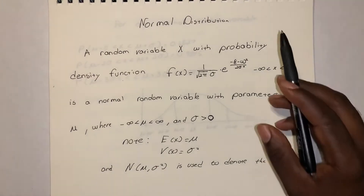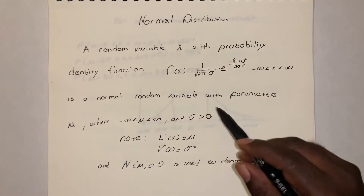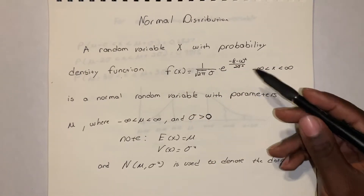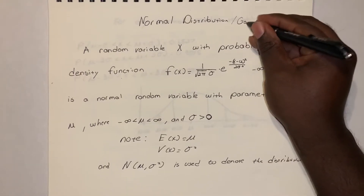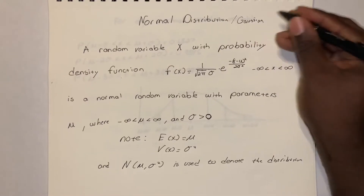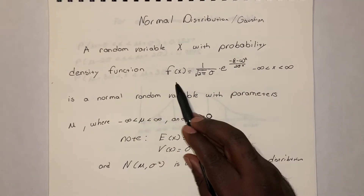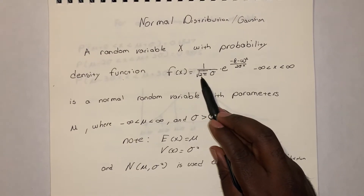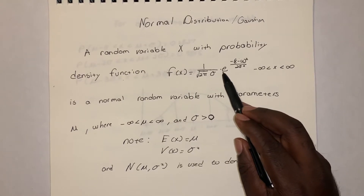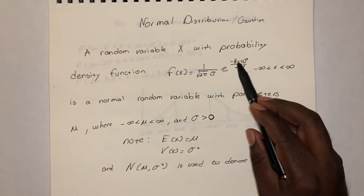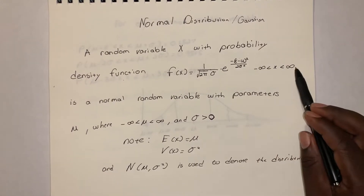Today I want to talk about a special distribution. Last time it was a uniform distribution, but this one is a normal distribution. You'll see it a lot in different types of literature because it's so important to science, mathematics, and engineering. It's also called a Gaussian distribution. A random variable X has PDF f(x) = 1 divided by the square root of 2π times σ, multiplied by e raised to the power of negative (x − μ)² divided by 2σ², from negative infinity to positive infinity.